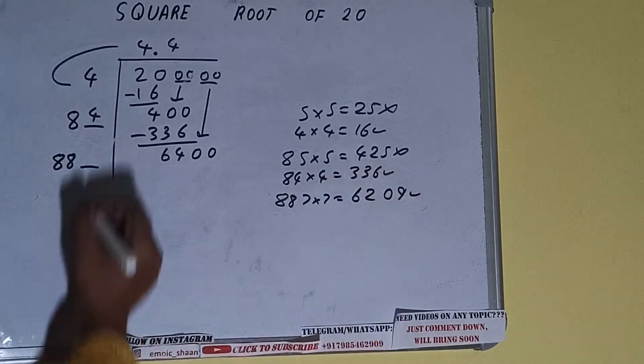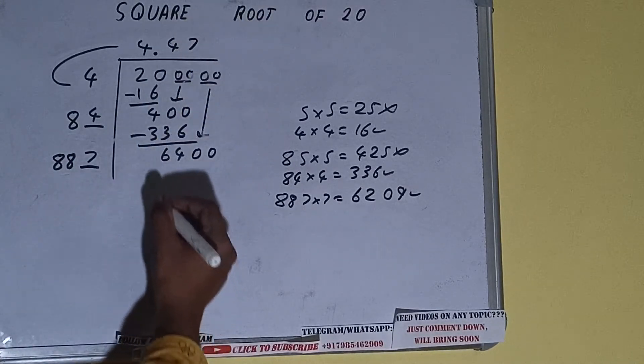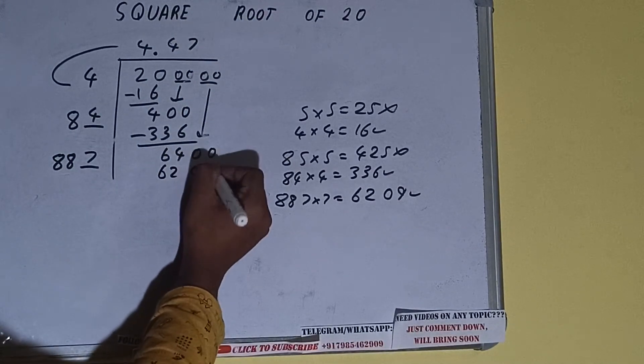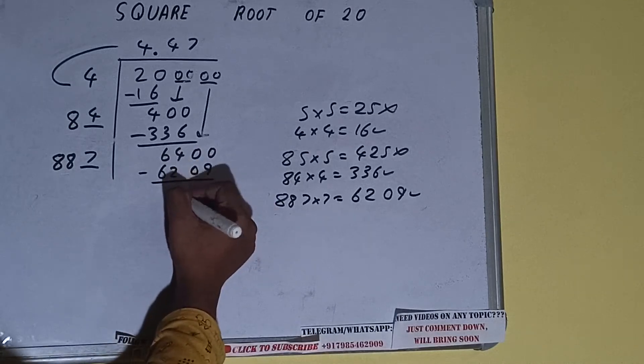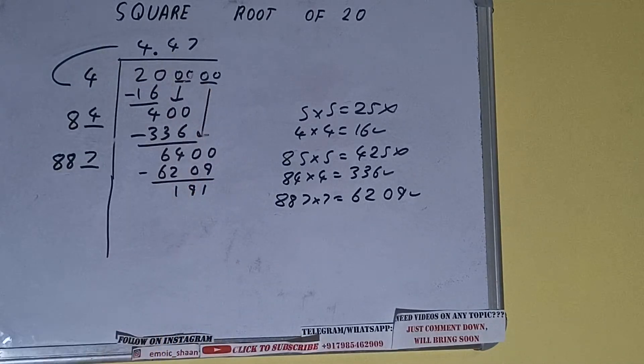So 7 here and 7 here: 6209. Subtract it and 191 will be left.